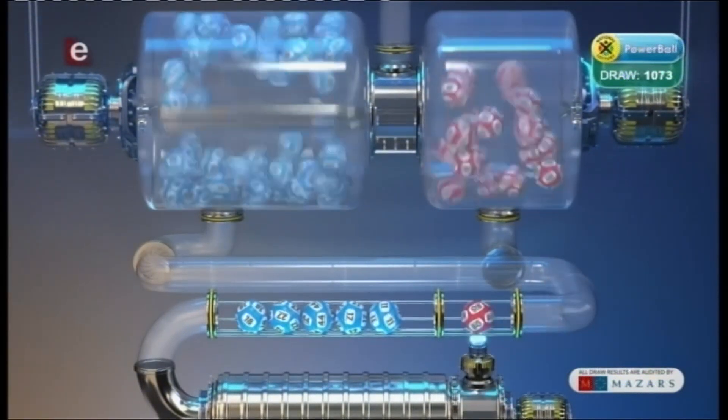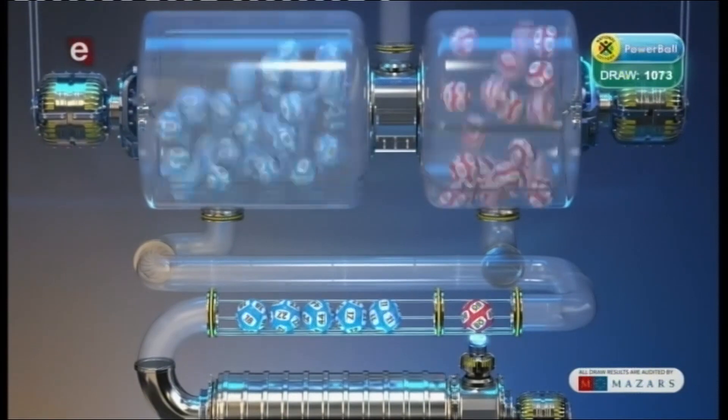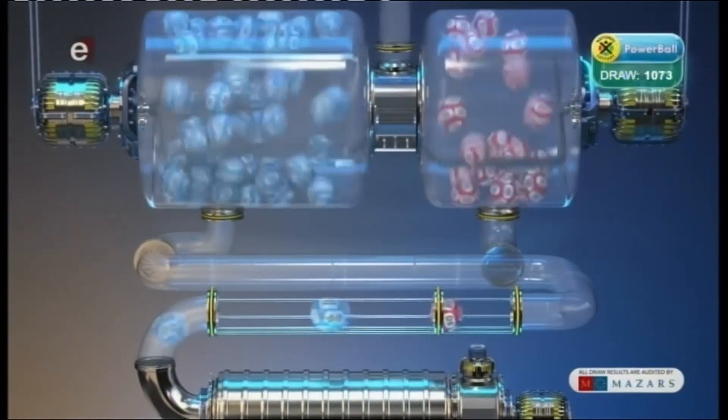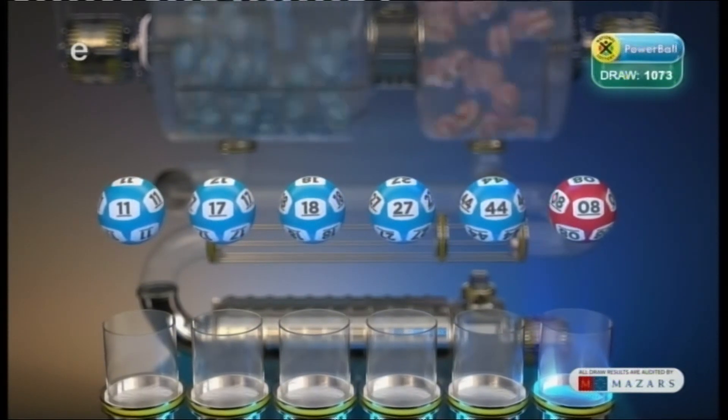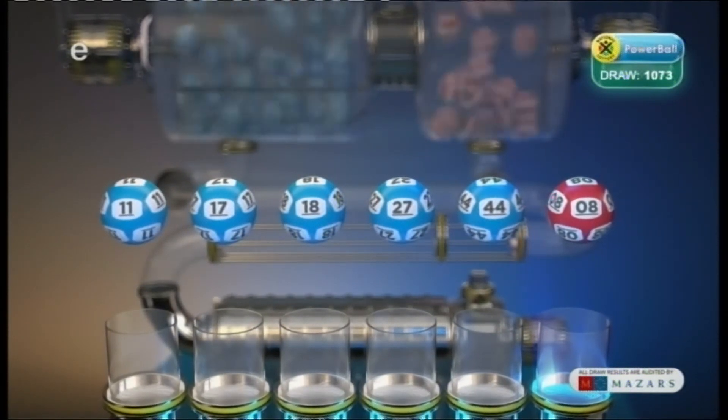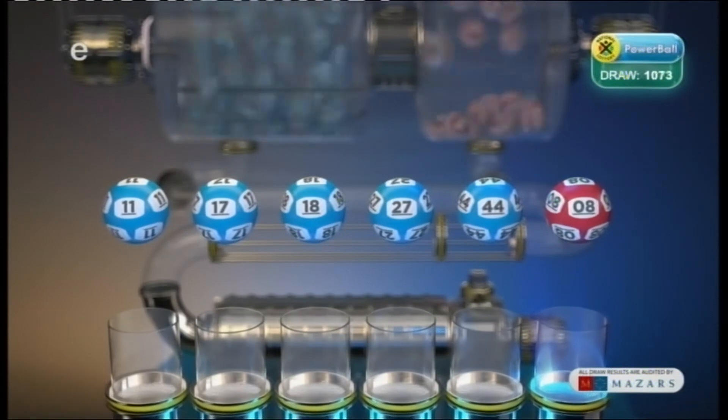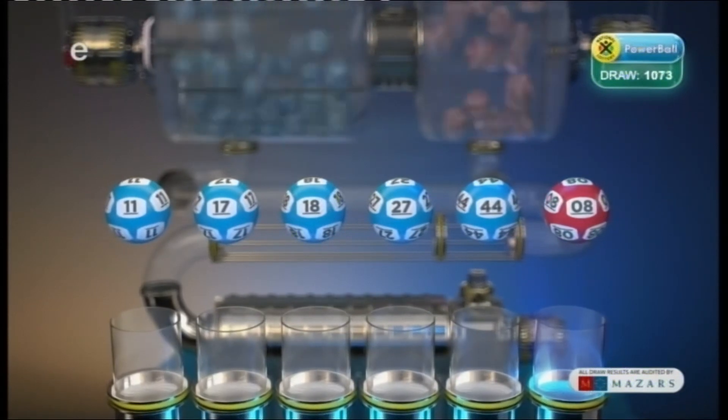And the Powerball is 8. Let's recap these numbers in numerical order: 11, 17, 18, 27, 44, and the Powerball is 8.